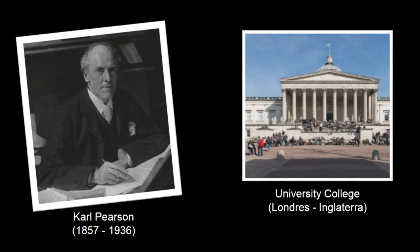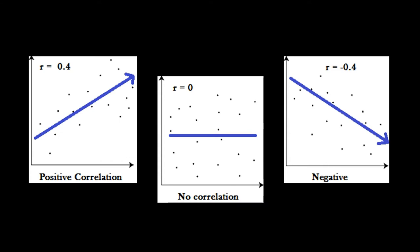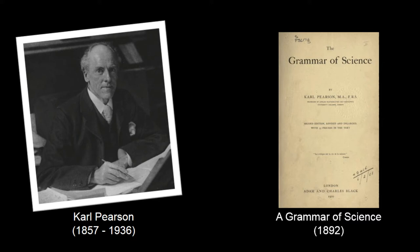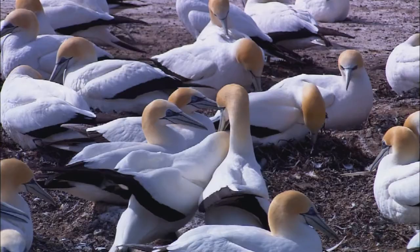Já como estatístico, enfatizou medir correlações e ajustes de curvas aos dados, desenvolvendo a nova distribuição do qui-quadrado. Em 1892, ele publica A Grammar of Science, onde argumentou que o método científico é essencialmente descritivo e não explicativo.